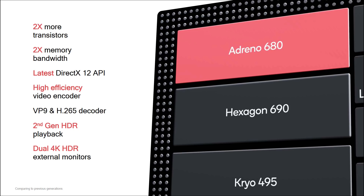The GPU is double the size in terms of transistors, with double the memory bandwidth — really important for getting 3D model and triangle data back and forth from main memory quickly. A very important feature: it supports the latest DirectX 12 API, because here we're dealing with Windows rather than mobile 3D APIs. On top of that, you've got video encoding and decoding and HDR support.